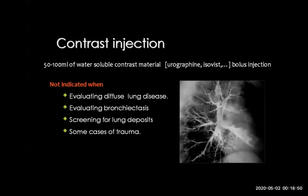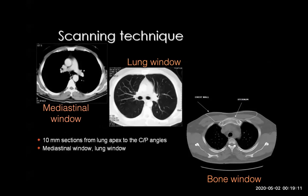We don't use contrast in some trauma cases when there is no suspicion for vascular injuries. Sometimes we use CT scan for high-risk patient screening for CA bronchus. When we scan the patients, the result is computed, so we can choose the mediastinal window, lung window, or bone window according to the needs. For example, to assess the mediastinum for soft tissue and vessels, we choose the mediastinal window; for parenchyma, the lung window; for bone, the bone window.